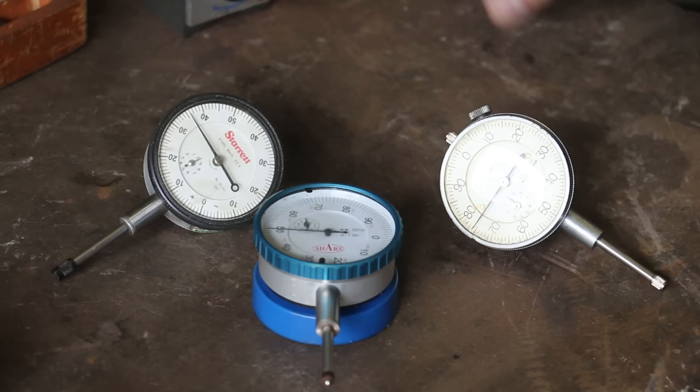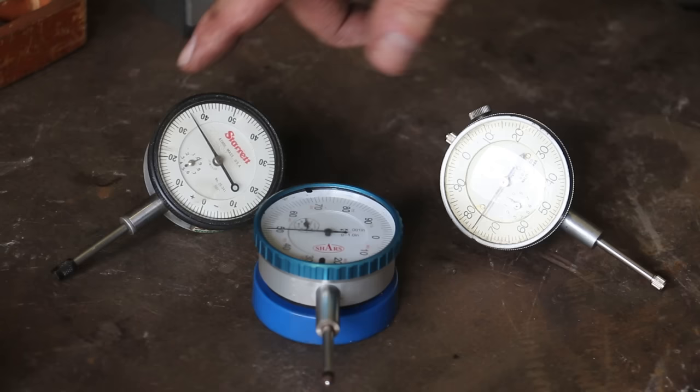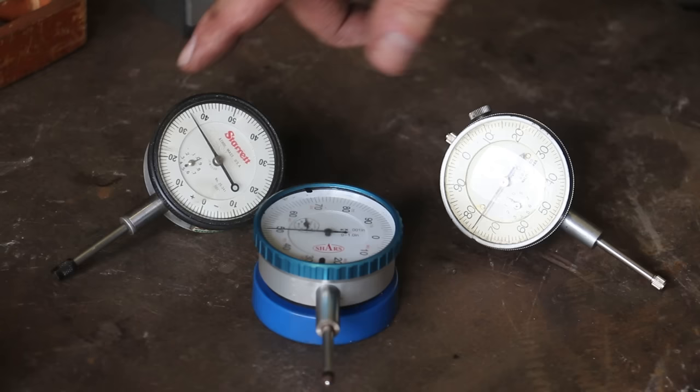While I wouldn't necessarily call them a disposable item in the machine shop, an argument could be made that they are kind of disposable. A $20 Shars indicator will do you well, as well as a lot of the other imports, Harbor Freight, some of those guys. The quality on them, I don't think is quite as good, but it's probably good enough for most applications. If you buy a good name brand indicator like the Starrett or Ames, you can buy a used one online and very often for pretty cheap. Even if you have to send these off and have them rebuilt, you basically have a brand new indicator again.